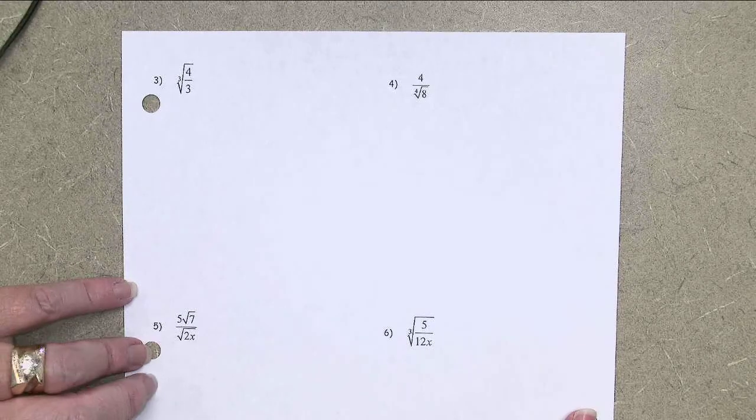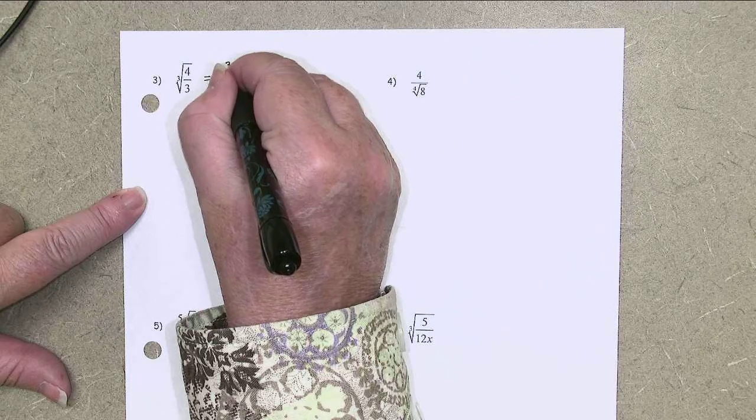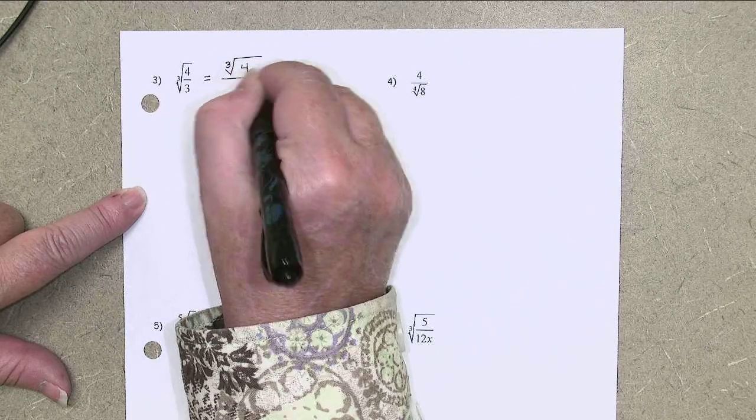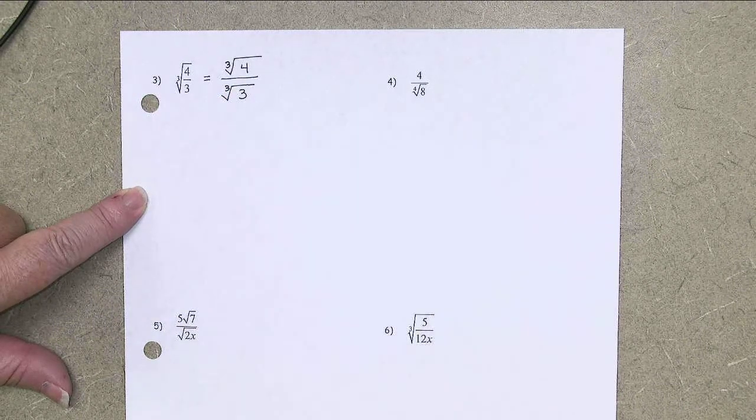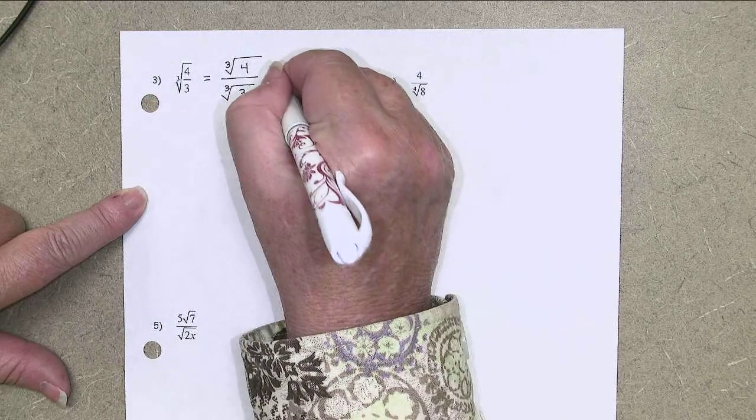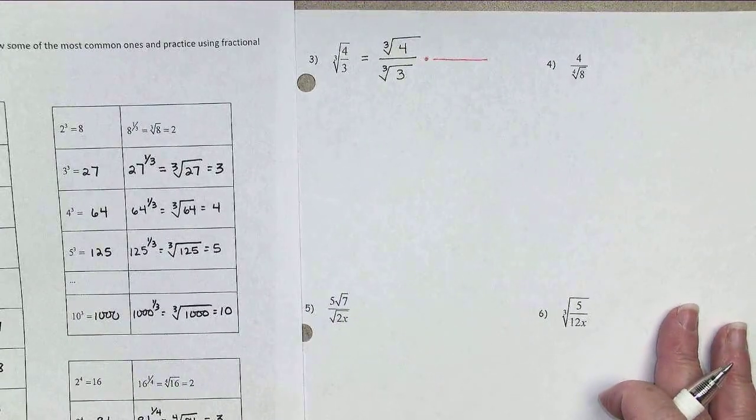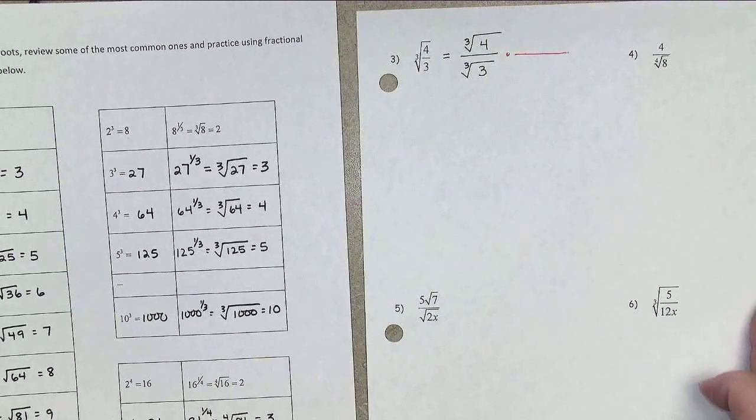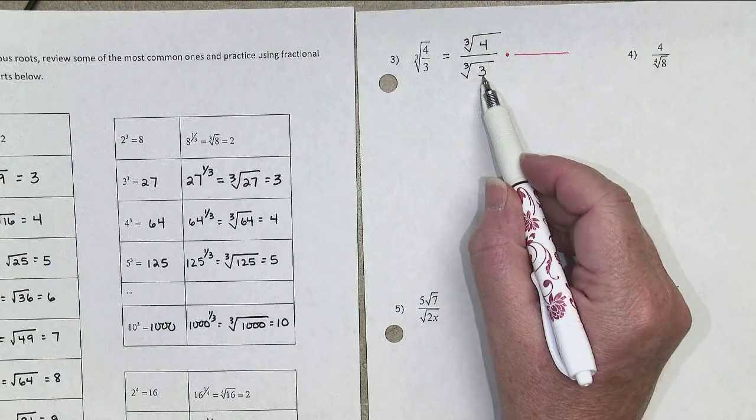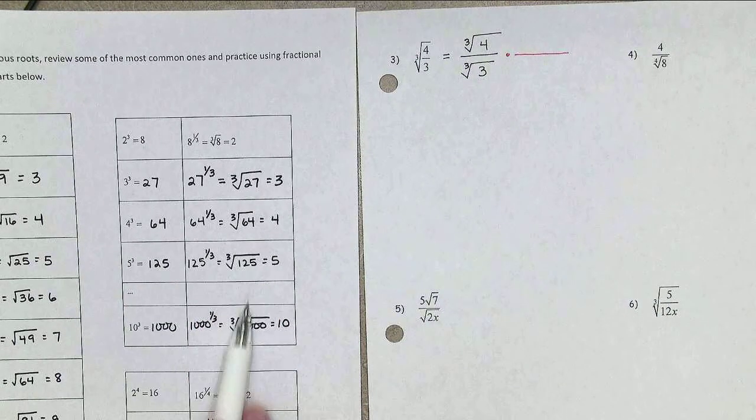We'll look at a few more examples of rationalizing denominators. Here's a cubed root example. And, again, I'm going to start by saying I certainly can't reduce that fraction, so let's just separate the numerator and the denominator. I need to make the denominator come out evenly. Let's remind you here of the list of perfect cubes. What could I turn that 3 into that's a perfect cube, something whose cube root's going to come out evenly?